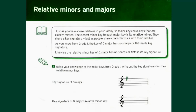Let's look at the exercises on page 22. In the first question, using your knowledge of major keys from grade 1, write out key signatures for their relative minor keys. Since major and minor keys share the same key signature, all you have to do is write the same key signature. They have given us G major, and you need to write the key signature of G major's relative minor, which will also have one F sharp.